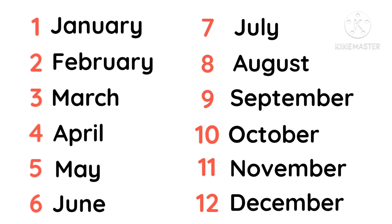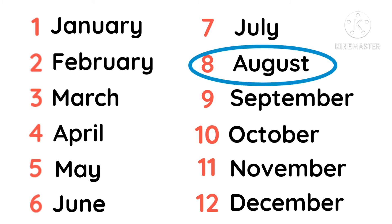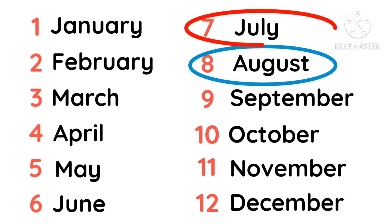Now, which month comes before August? Is it July or November? Well done! July comes before August.